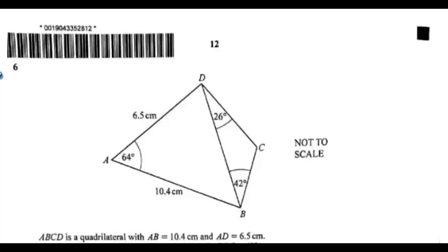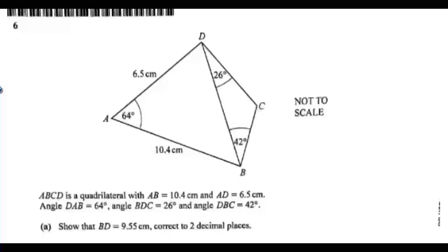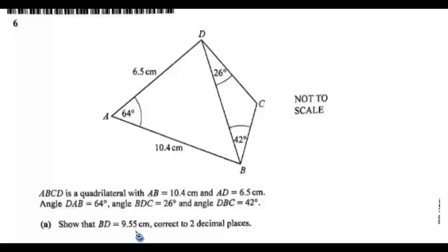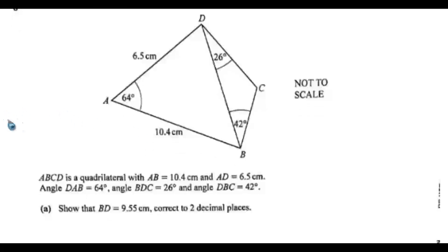Question six: ABCD is a quadrilateral with AB equals 10.4 centimeters and AD equals 6.5 centimeters. Angle DAB equals 64 degrees, angle DBC equals 26 degrees, and angle DBC equals 42 degrees. Show that BD equals 9.55 centimeters correct to two decimal places. Let's look at line BD — we can draw triangle ABD.